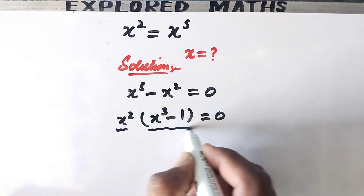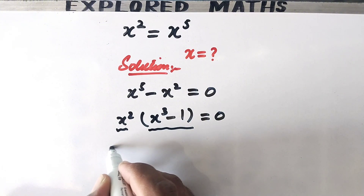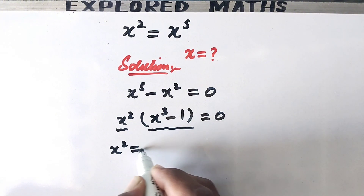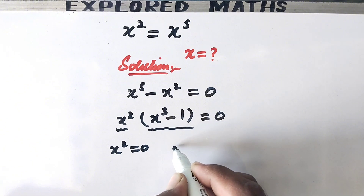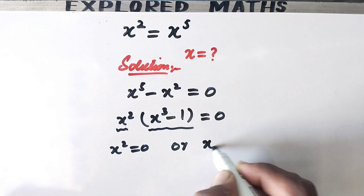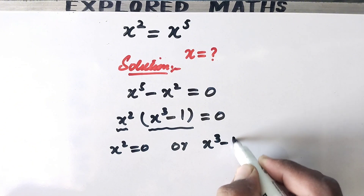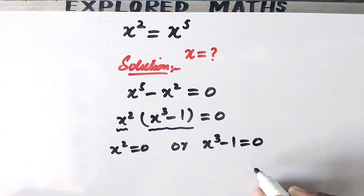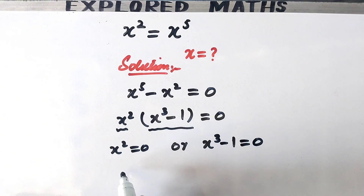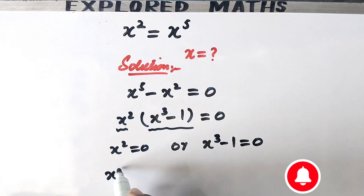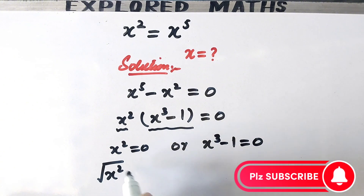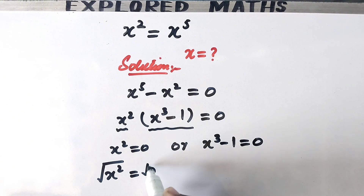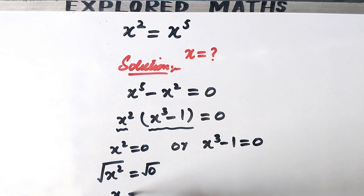So here we can see that there are two factors that are equal to 0. So here it will be x squared equal to 0, or x cubed minus 1 equal to 0. Taking the square root on both sides, x will be equal to plus or minus 0.